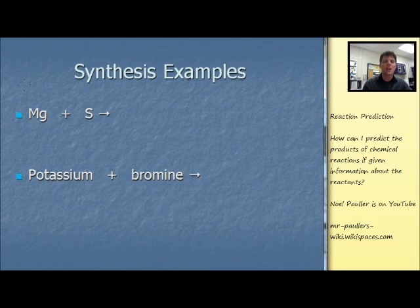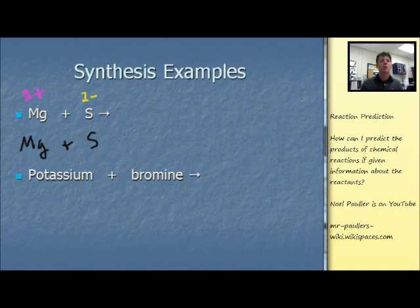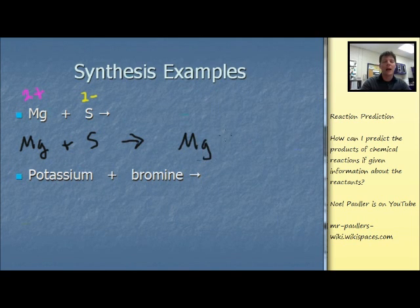Now let's look at some examples of synthesis reactions. We have an element plus an element. It is important if we have a metallic element here, a non-metallic element here, to realize that we're going to form an ionic compound. So we want to keep in mind the charges of these elements as they form ions. So magnesium plus sulfur will produce magnesium sulfide. That will be a 1 to 1 ratio of magnesium to sulfide ions because of the plus 2, minus 2 charges.